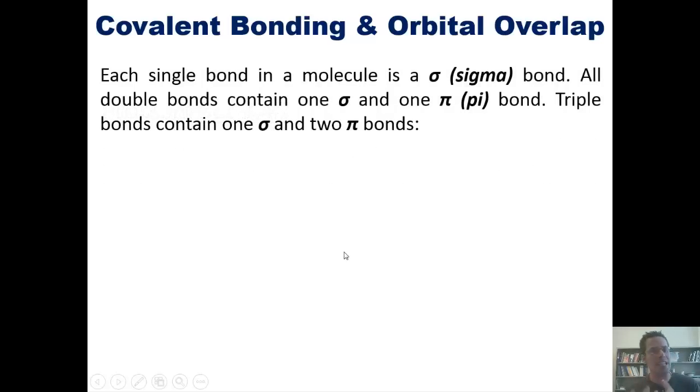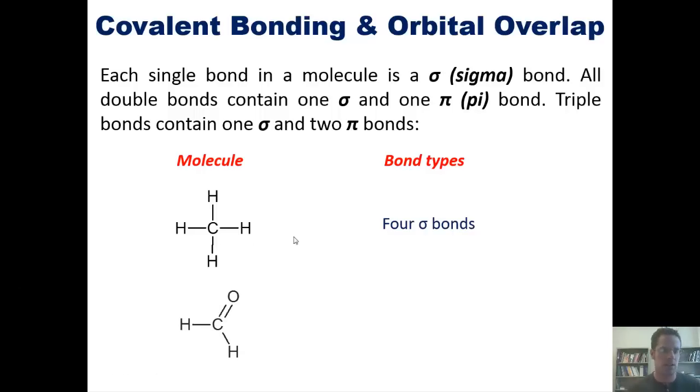Just so you know, each single bond in a molecule is called a sigma bond. All double bonds contain one sigma and one pi bond. Triple bonds, in contrast, each contain one sigma and two pi bonds. We can see that exemplified in these examples. If I've got a molecule of methane, carbon with four hydrogens around it, that molecule has four individual sigma bonds. Each of these carbon-hydrogen bonds is a sigma bond because they're all single bonds.